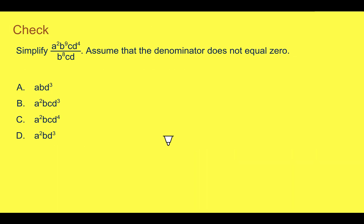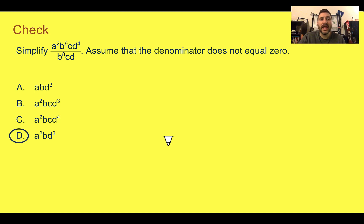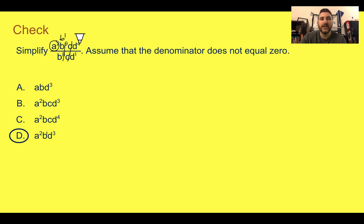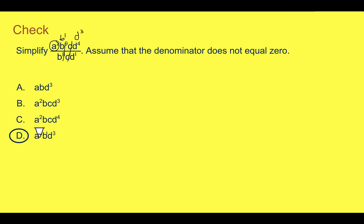Check your understanding: simplify the expression given and choose the correct answer. Pause the video now and complete the check. The answer is d: a to the 2nd, b, and d to the 3rd. There is no a on the bottom, so a to the 2nd just stays. b to the 9th and b to the 8th make b to the 1st. c and c cancel out — that's c to the 0, so zero c's. And d to the 4th and d to the 1st makes d to the 3rd.